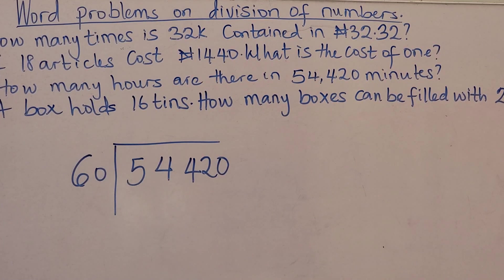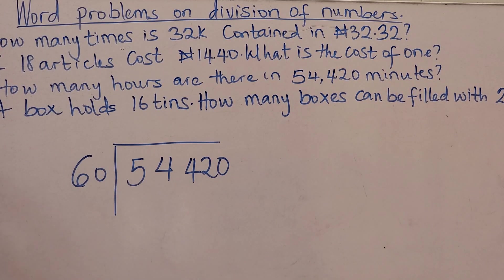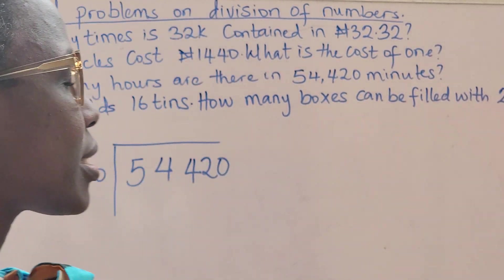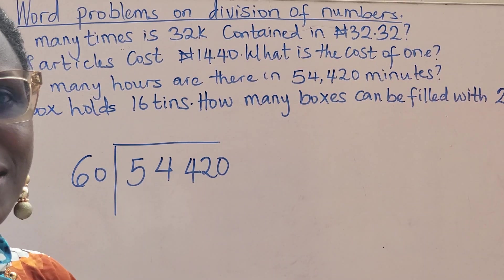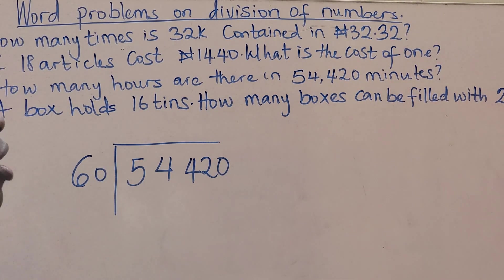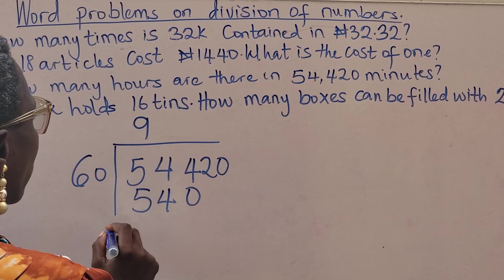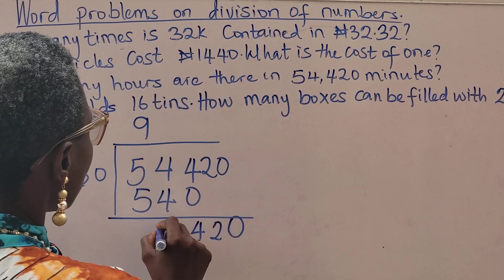We have 54,420 divided by 60. 54 can't go, so we have to go to 544. 60 times 1 is 60, times 2 is 120, times 3 is 180, times 4 is 240, times 5 is 300, times 6 is 360, times 7 is 420, times 8 is 480, times 9 is 540 which is close to this. So we have 9.